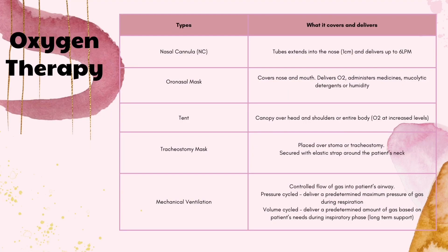Next we're going to be going over different types of oxygen therapy, what they cover, and what they can deliver. The first one is the nasal cannula, which is probably the most common. You see it in the hospital, in nursing homes, or even out in public. It is a tube that extends into your nose, goes over the ears and down into a tank, and it can deliver up to six LPMs.